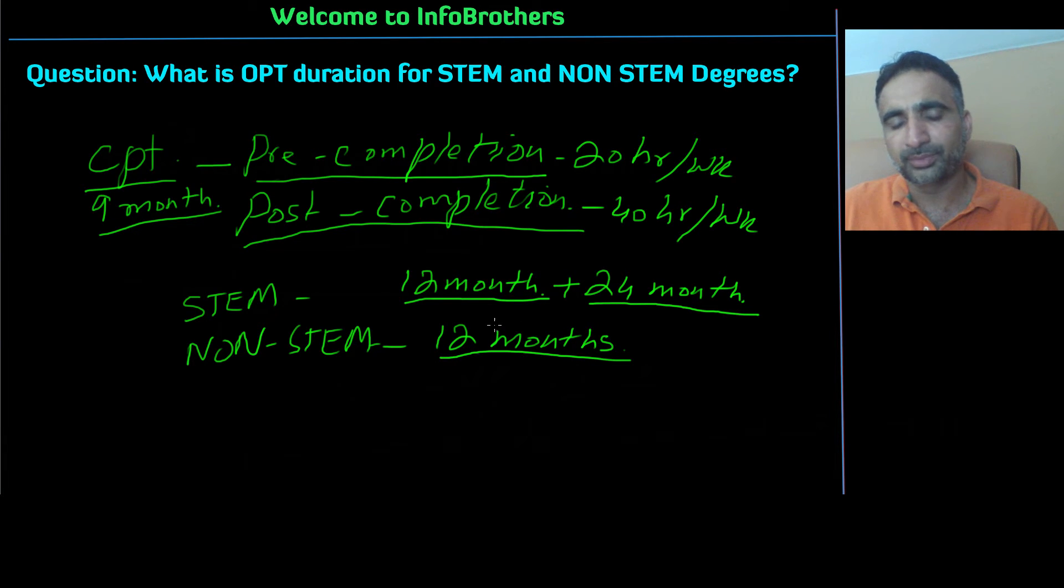So that's where you need to make very precise decisions. You don't want to waste this time if you are doing non-STEM degree and you don't want to waste 12 months on pre-completion while you are studying only for 20 hours. You want to use this time maybe as a CPT while you are studying.